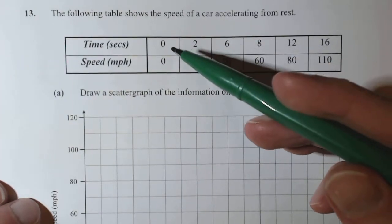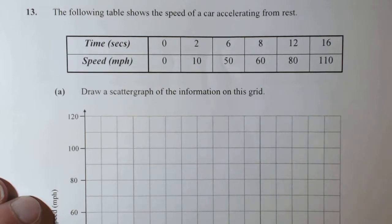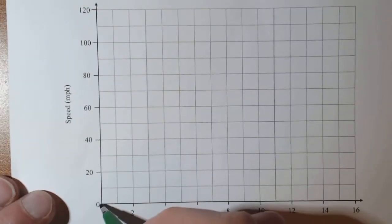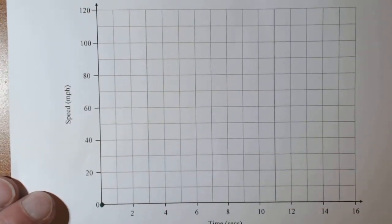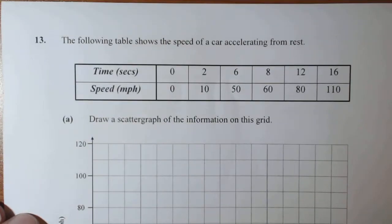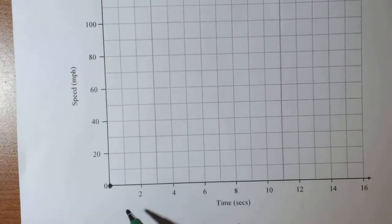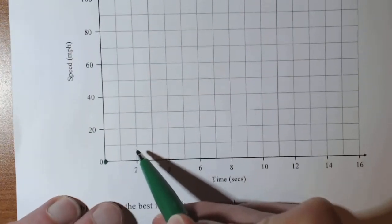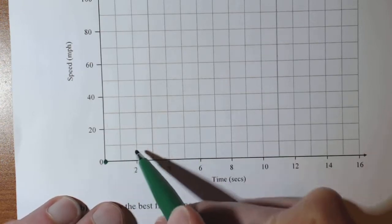Right, so what they're saying is time zero, speed zero. So straight away, starting off, not going anywhere. You then say two seconds time, it is at 10. So two seconds time, 10. Each square is going up 10.